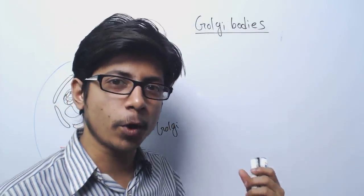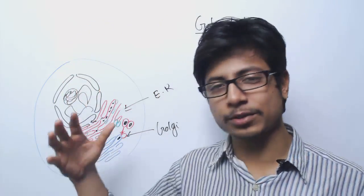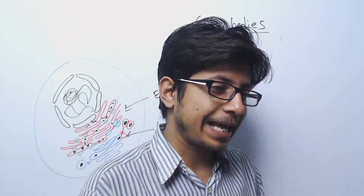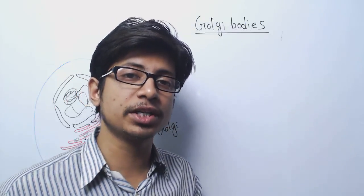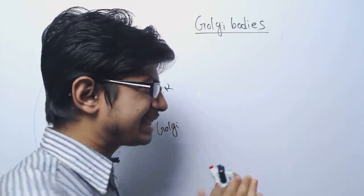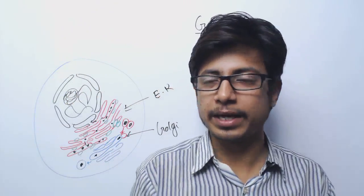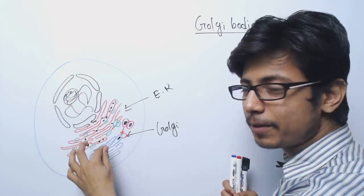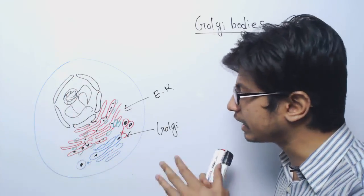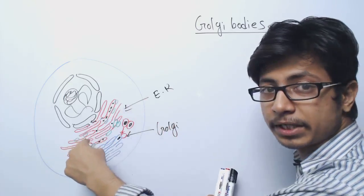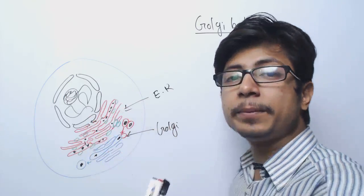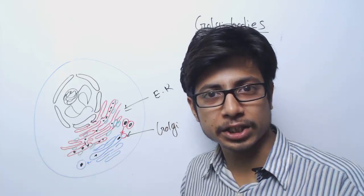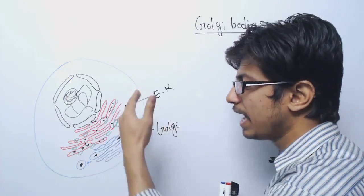Golgi apparatus is one of the very important organelles of eukaryotic cells. It is found in eukaryotic cells and is a single membrane-bound organelle that helps in the sorting of proteins as well as the post-translational modification of proteins. The Golgi body is connected with a system called GERL — the complete mechanism involving the nuclear envelope, through the endoplasmic reticulum, and then the Golgi apparatus.